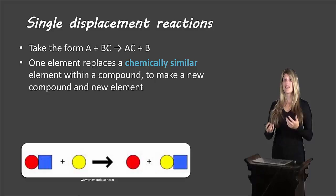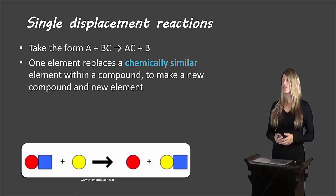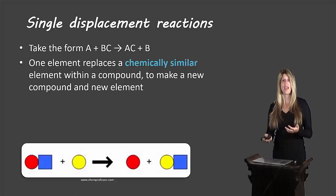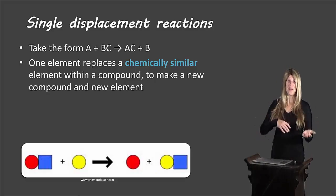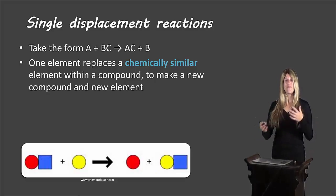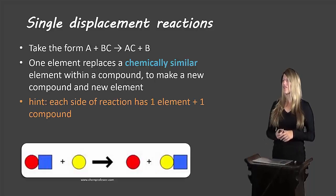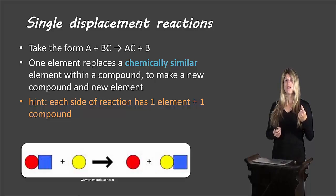One element replaces a chemically similar element within a compound to make a new compound and a new element. When I say chemically similar, that means a cation could replace a cation, an anion could replace an anion, a metal could replace a metal, a nonmetal could replace a nonmetal — but a cation cannot replace an anion, for example. It always has to be the same type. A hint for identifying these reactions: there will always be one compound and one element on each side.